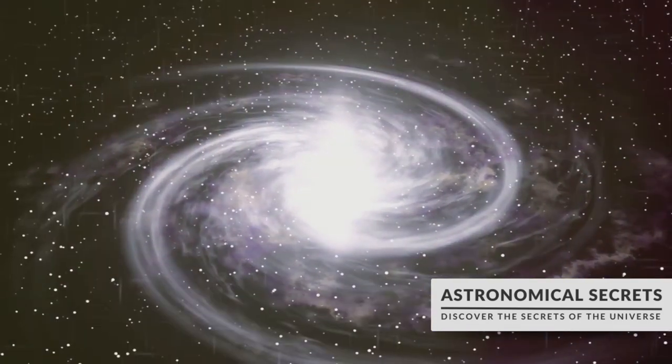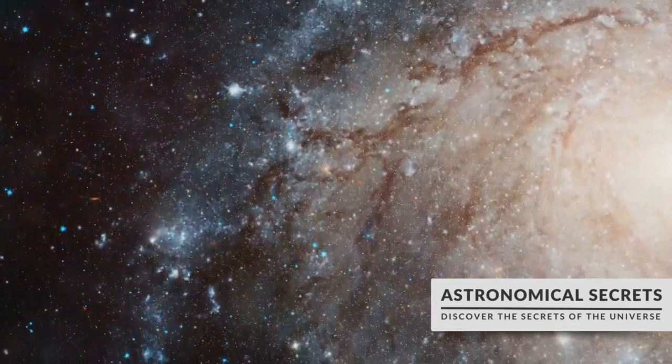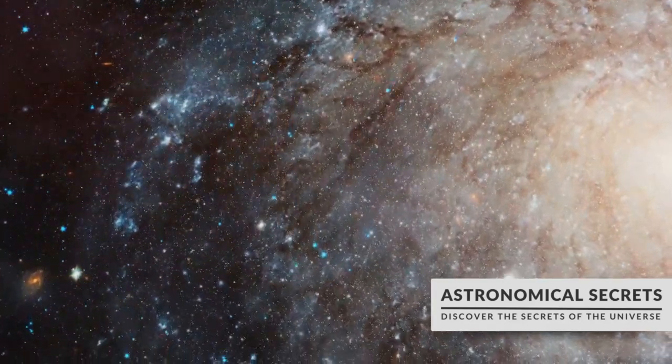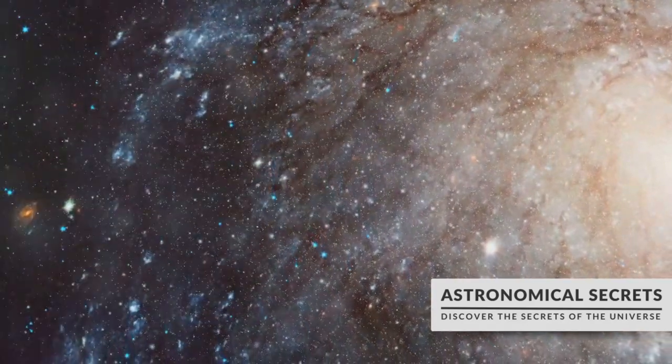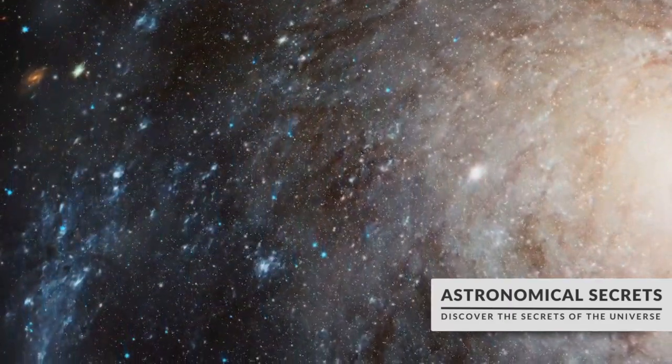Imagine a cosmic pinwheel spinning in the vast expanse of space. Then we have the flocculent spirals, galaxies that lack the grand structures of their counterparts. Instead, they possess short fragmented arm segments that appear fluffy or patchy, creating a somewhat chaotic appearance.